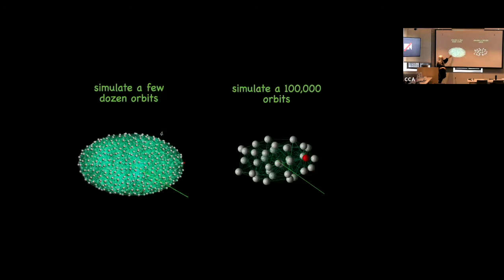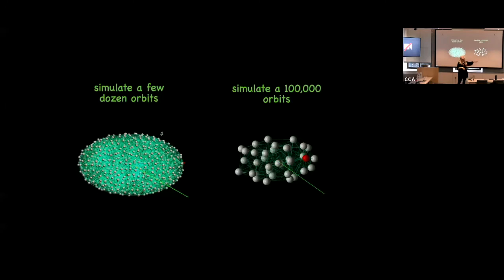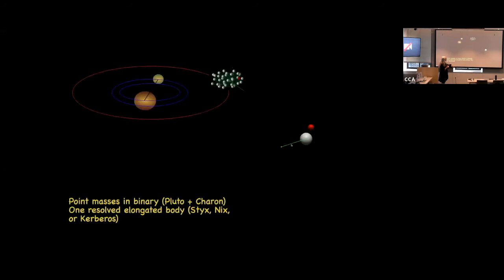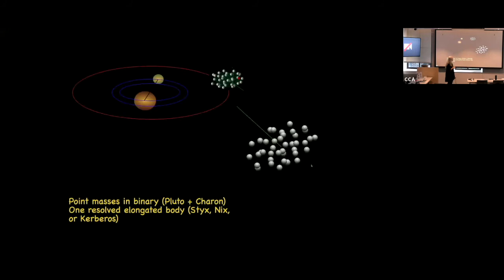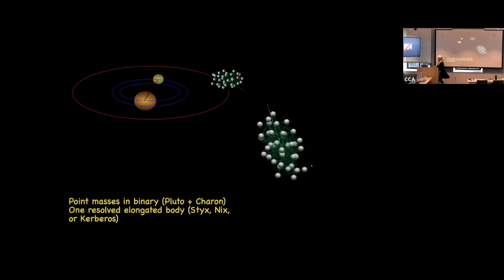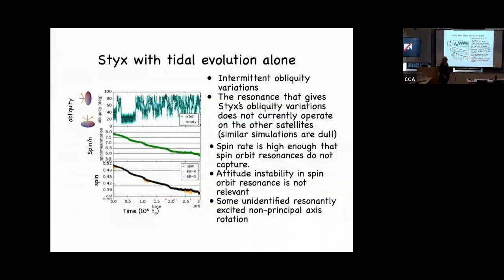We decided to see if we could find a mechanism to tilt the satellites over. We'd been doing simulations for a few dozen orbits with many particles, but now needed to simulate thousands to hundreds of thousands of orbits, so we went to poorly resolved bodies. In tidal spin-down simulations, the spin rate drops and the obliquity for Styx shows intermittent behavior as the body spins down. We see resonances being crossed, but what causes that? We needed to figure out the dynamical mechanism.